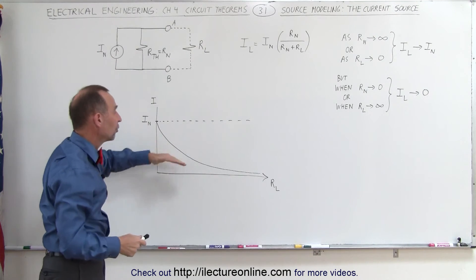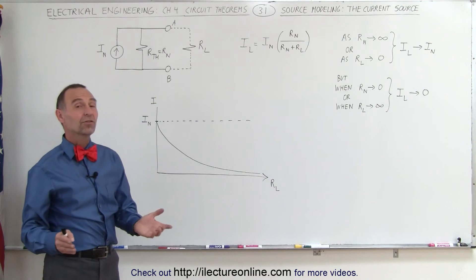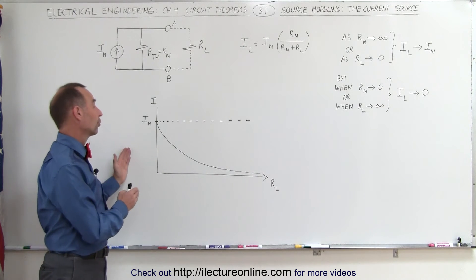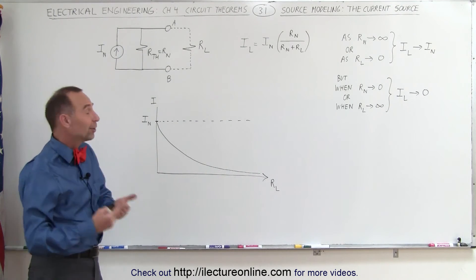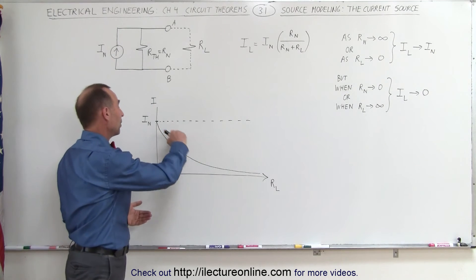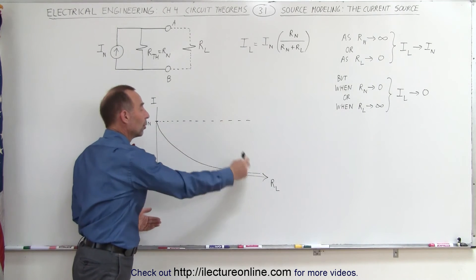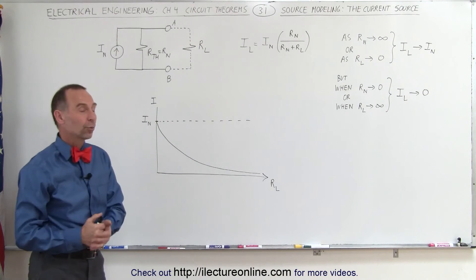So now you can see the difference between a real current source and an ideal current source. An ideal current source wouldn't have this drop-off. It would continue to provide the current regardless of the size of the load resistor.